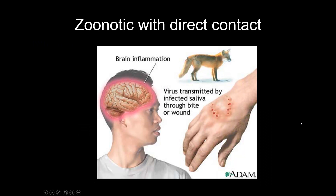Zoonotic with direct contact means you contacted a sick animal. The most common example is rabies — if you pet an animal that has rabies and it bites you, you get rabies. Cowpox is another example. Ringworm, though not viral, can also spread through direct contact with animals.